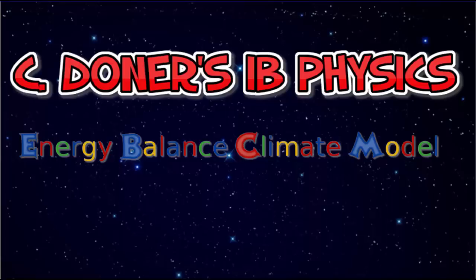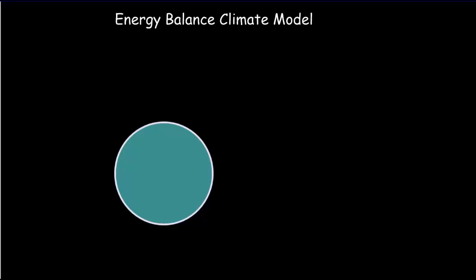We're going to begin this video with a very simple energy balance climate model. Then we're going to discuss the greenhouse effect and then make some upgrades to our model to take into account the greenhouse effect. So we're going to start by developing the simplest possible energy balance climate model, and all it's going to be able to do for us is predict an average temperature for the Earth.